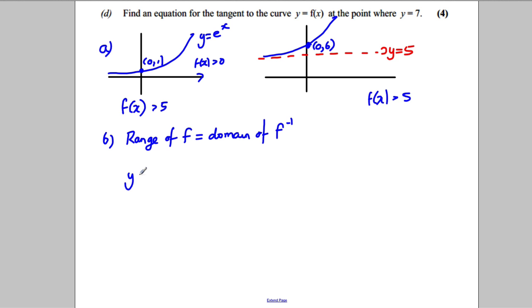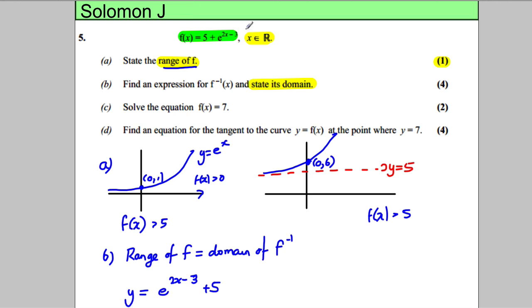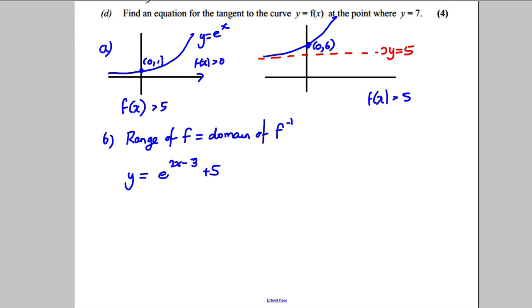So what we do is we let y equal to e to the 2x subtract 3 add 5 and you'll notice I just changed the order of those. There's no harm in doing that. Now we're going to swap x and y so x is equal to e to the 2y subtract 3 add 5.